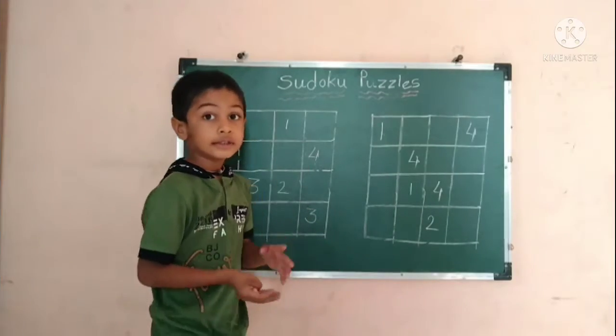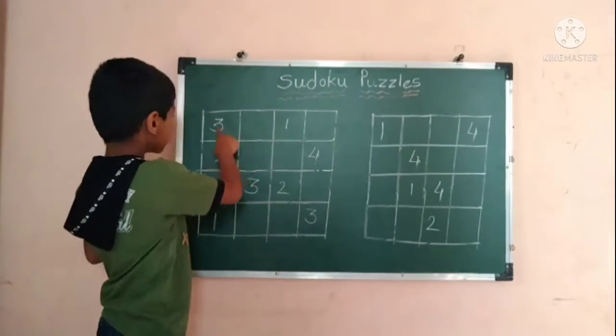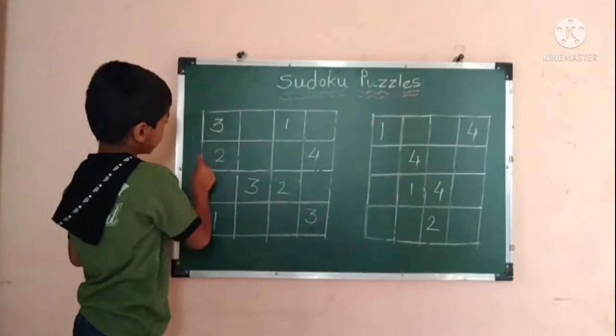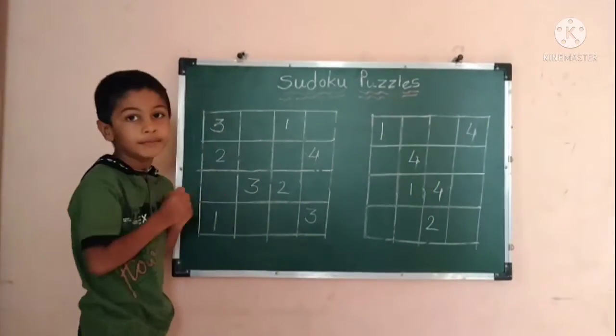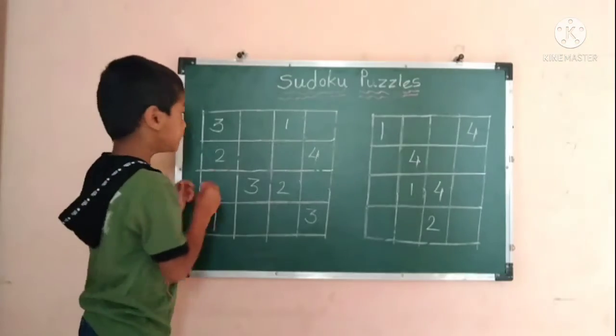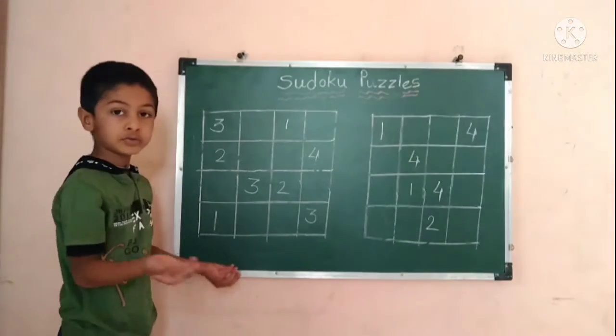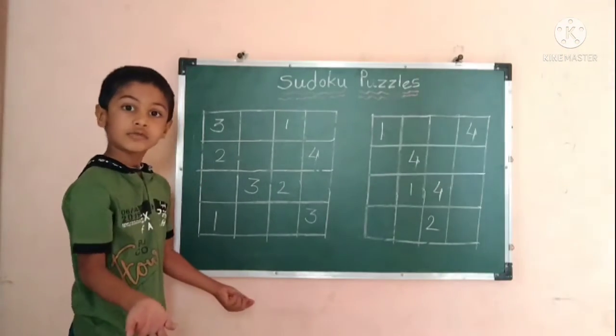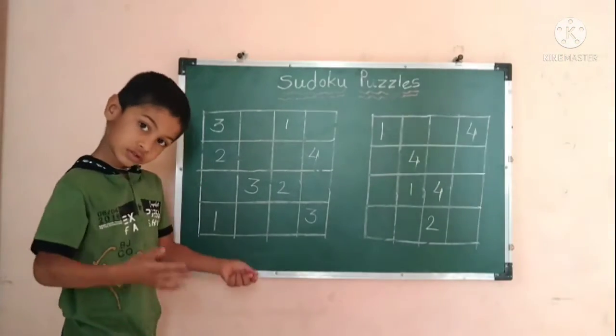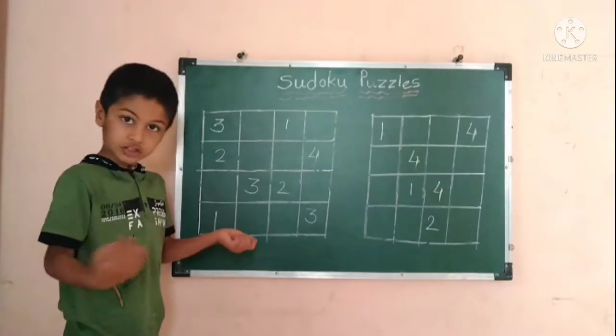Now let's see. This is a row and column. These have to have one to four numbers only.